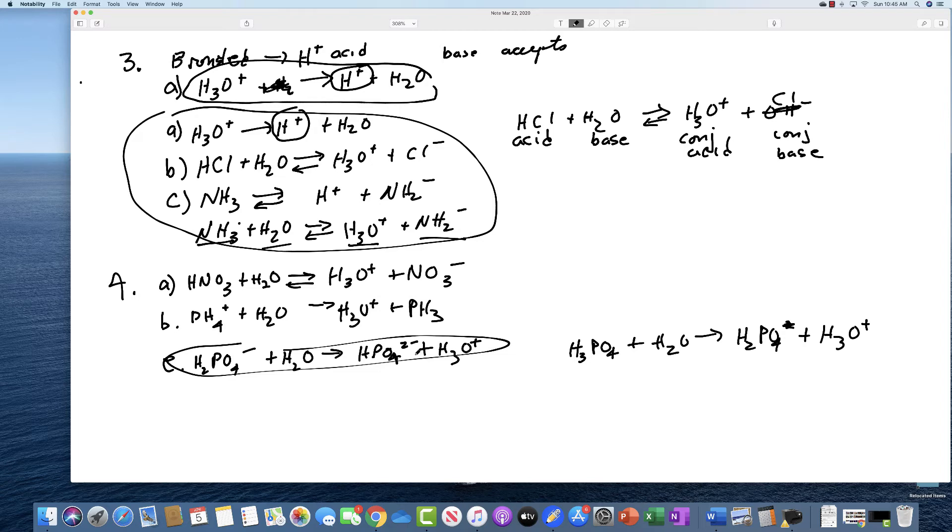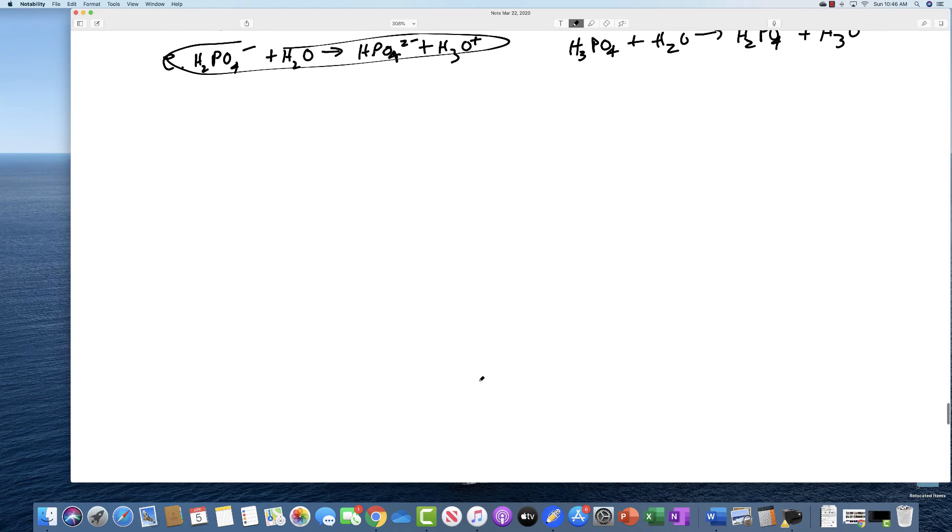Moving on to number 10. Number 10 says identify and label the Bronsted-Lowry acid, its conjugate base, the Bronsted-Lowry base, and its conjugate acid in each of the following equations. So I gave you some examples of this already, but let's go ahead and do this. We won't do all of these again, but we'll do several of them to give you an idea of what the pattern is.